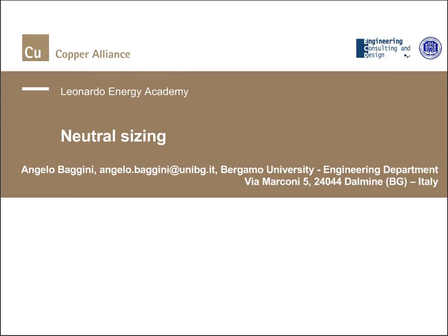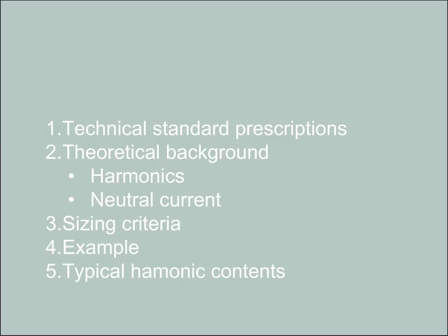The scope of this course is to analyze technical standard prescriptions on Neutral Sizing to discover some issues and problems to be taken into account. We will discuss the theoretical background of these prescriptions in terms of harmonics and their effects on neutral current. Then we will approach the sizing criteria, provide an example to be sure everything is clear, and before we conclude, we will list some typical harmonic content.